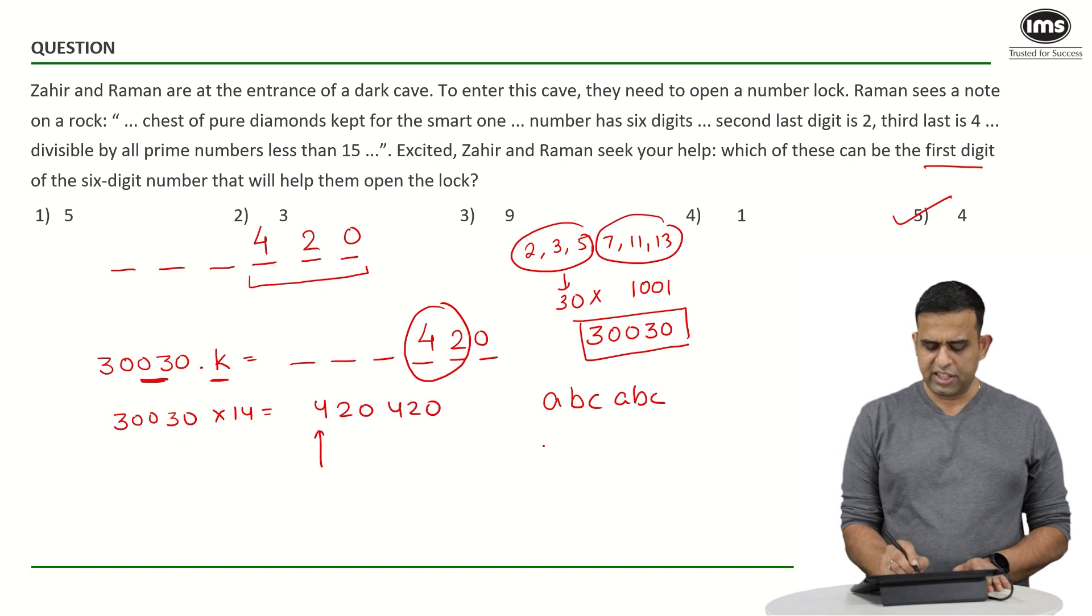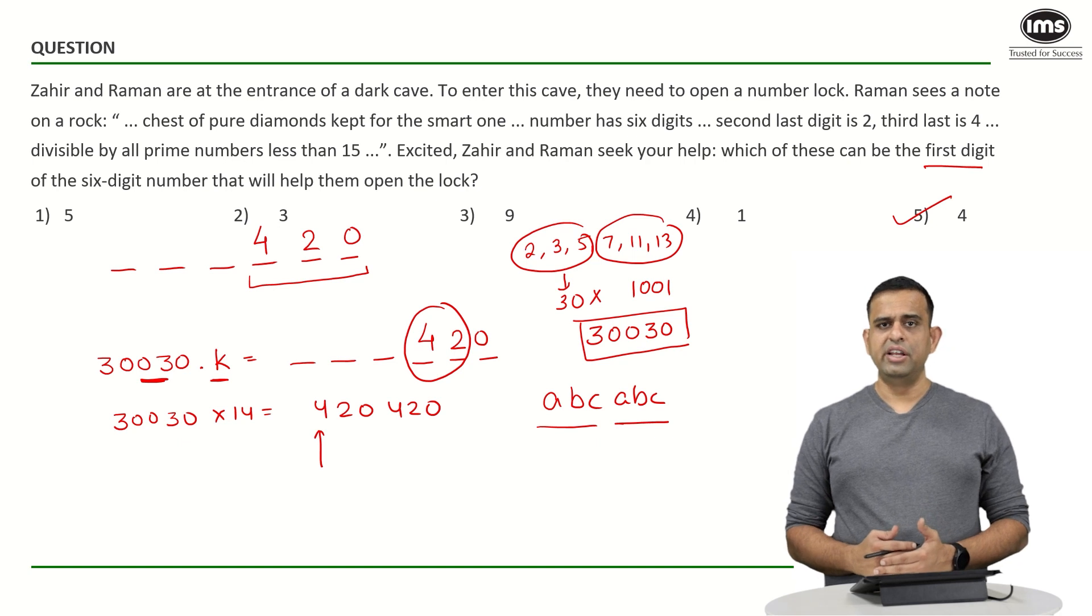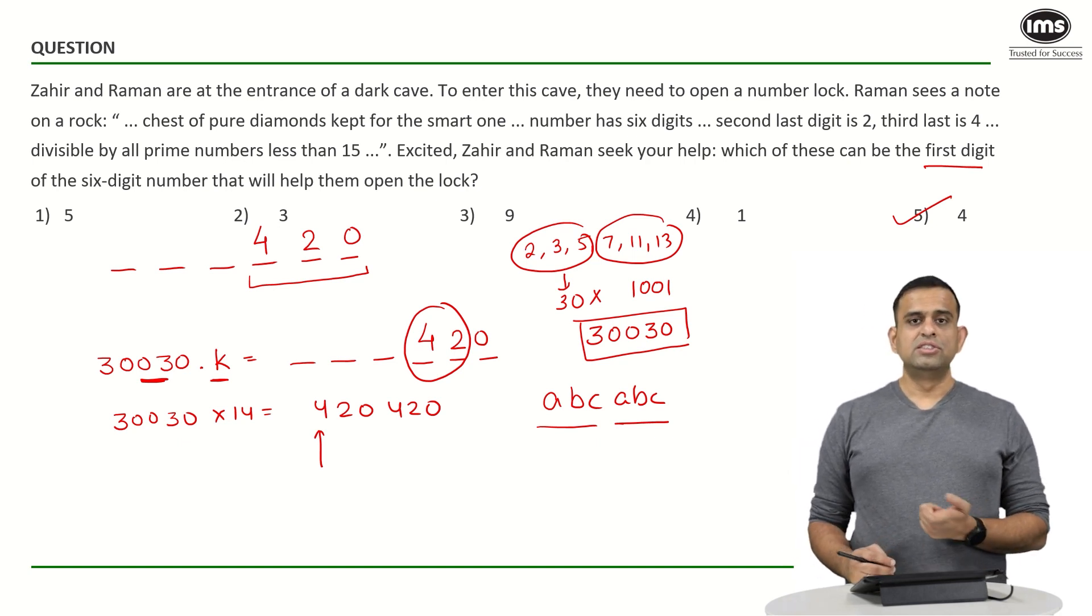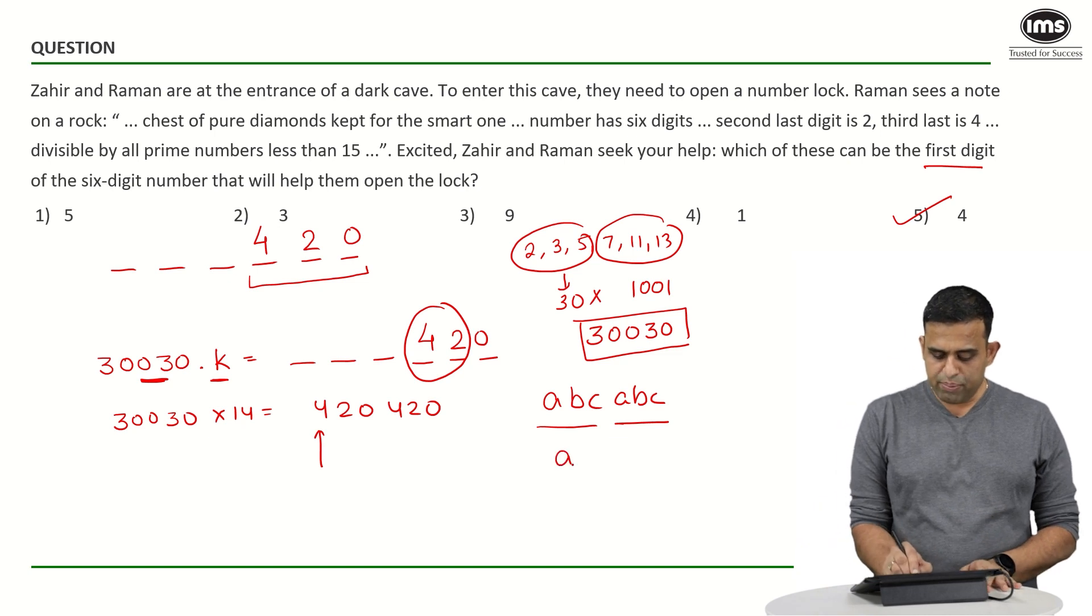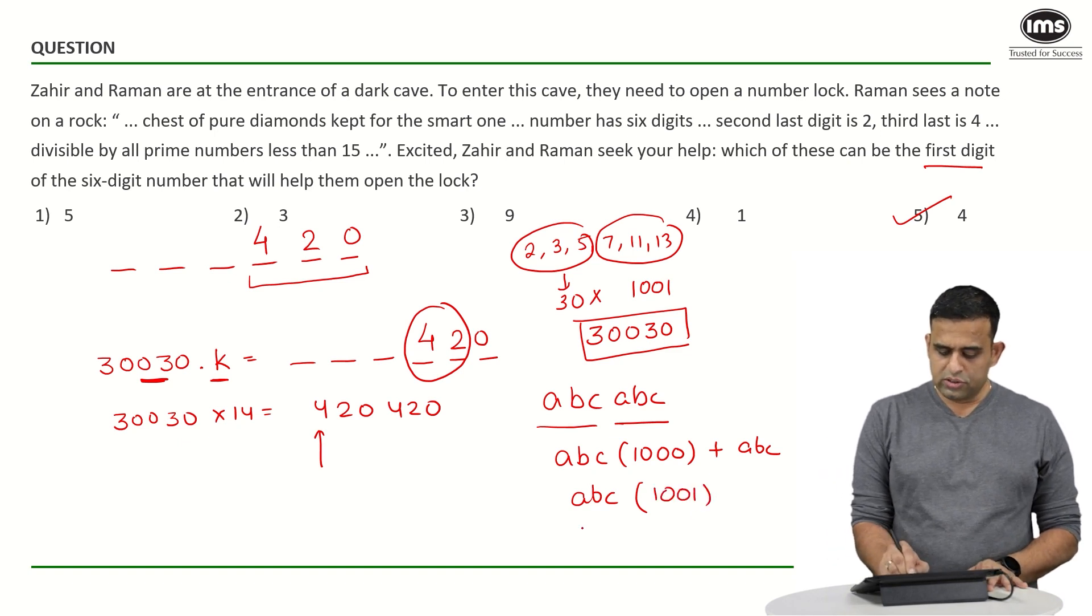Since I know that this particular part will end up being ABC into 1000 plus ABC this part becomes ABC common I get 1000 plus 1 giving us a number 1001.